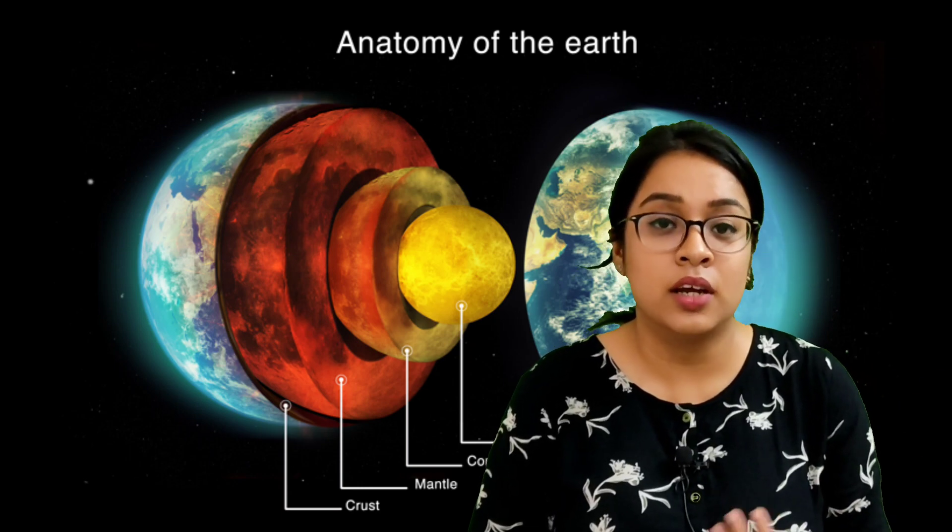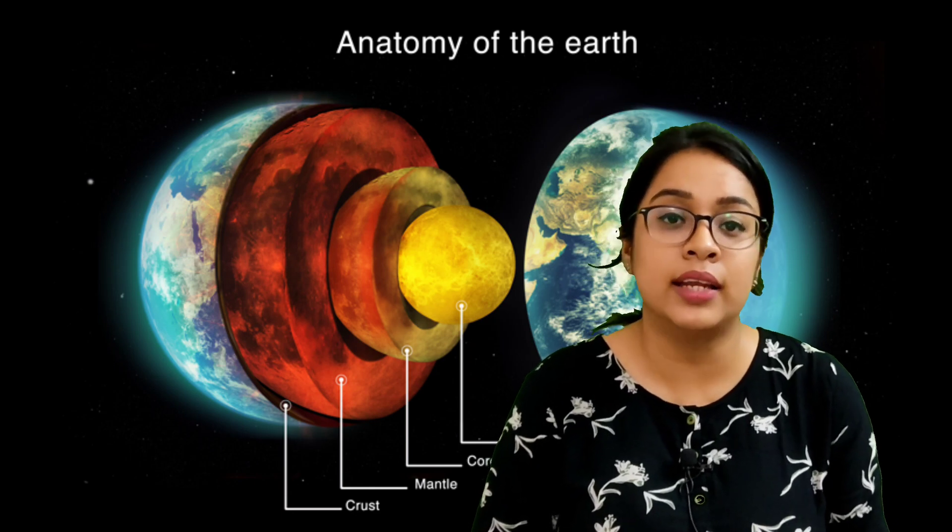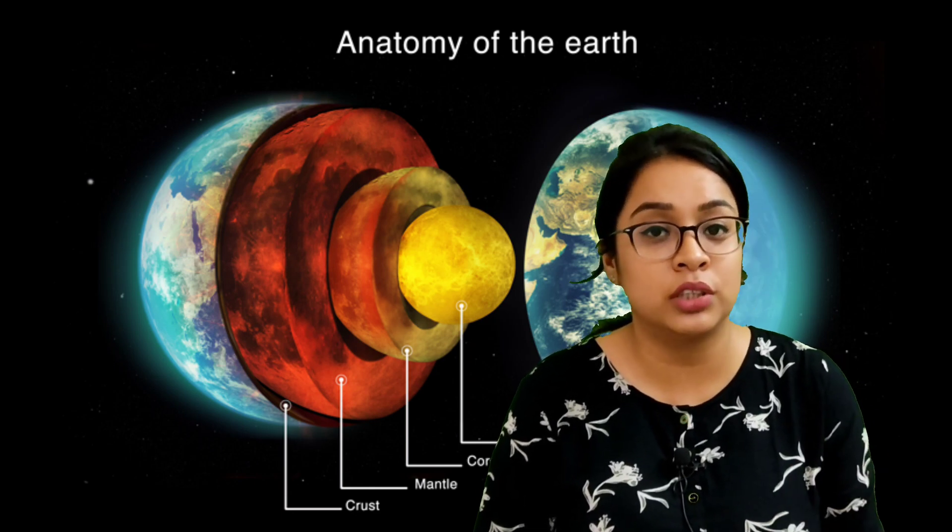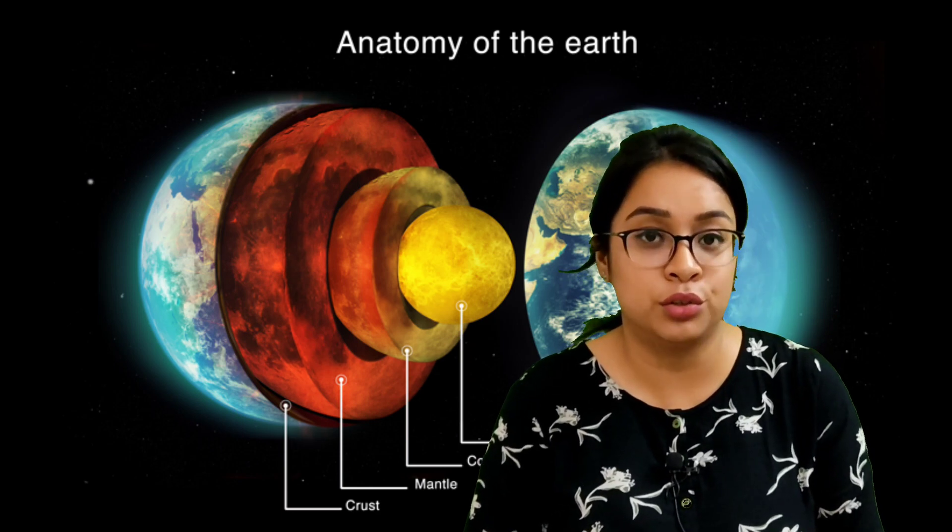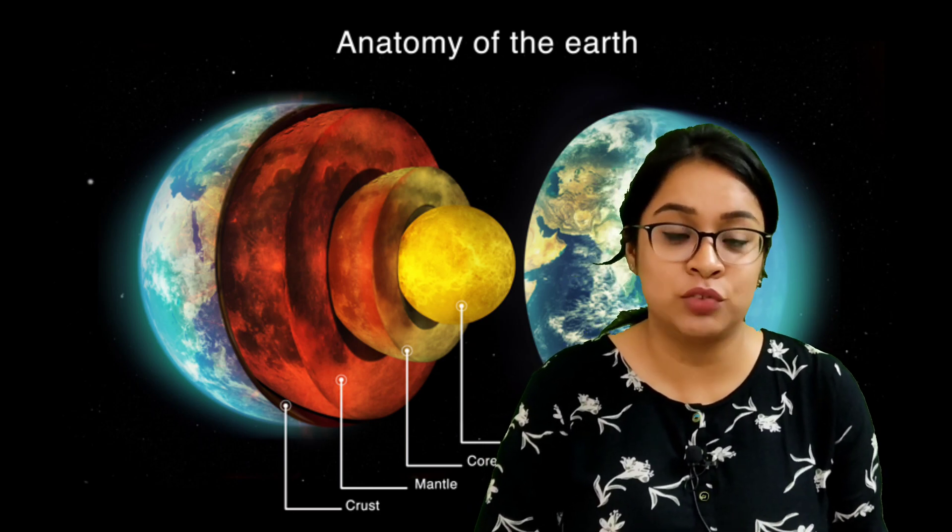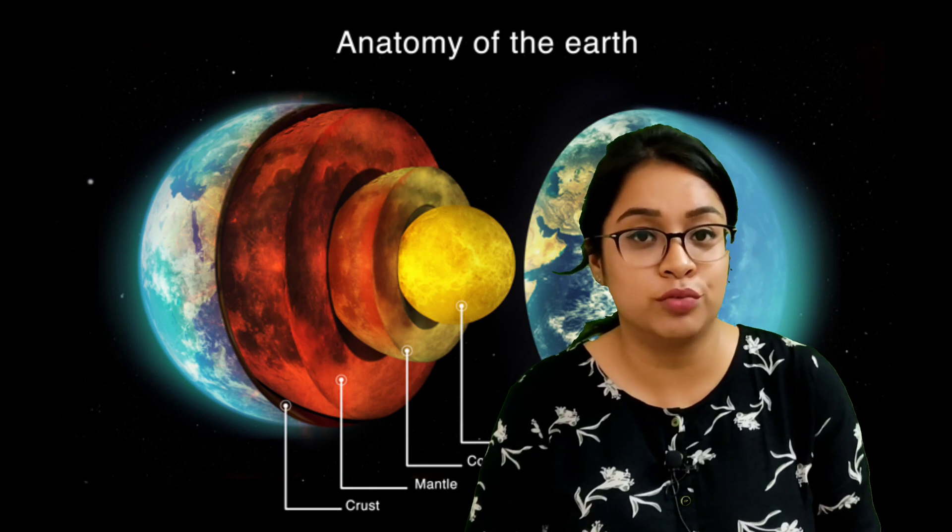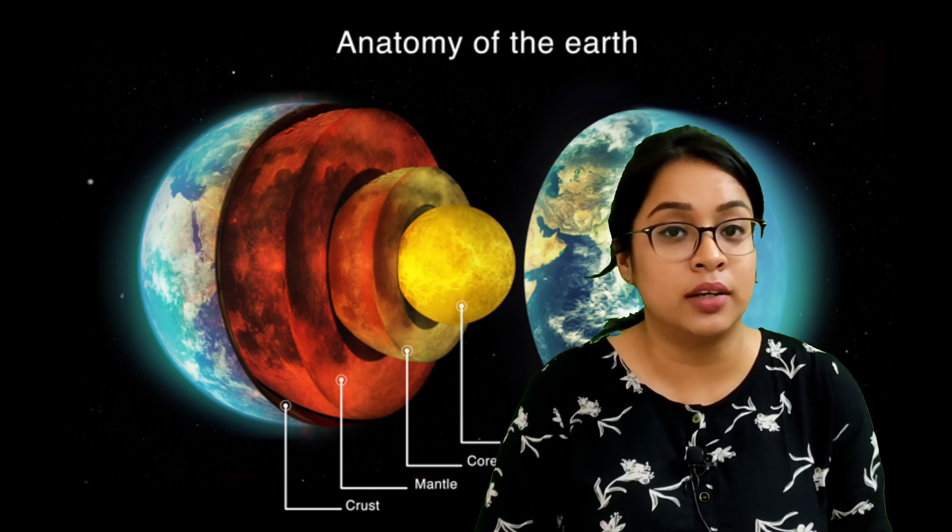The last layer is the crust. Crust is the outermost layer and it contains all the material which are required for the survival. Crust is made up of solid rock. Its thickness varies from 5 km under the ocean floor to 70 km under the continents.